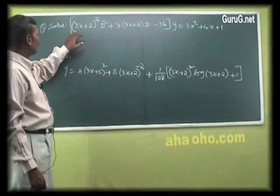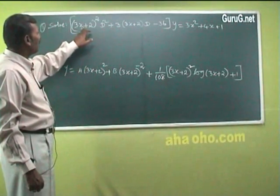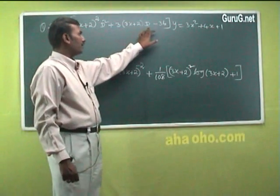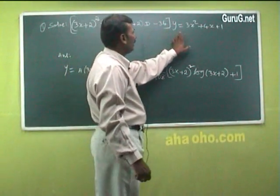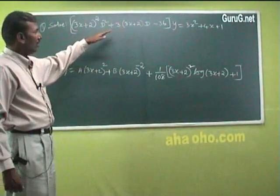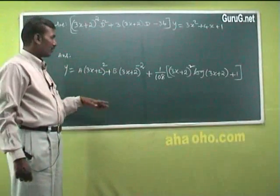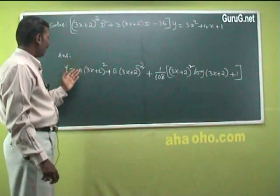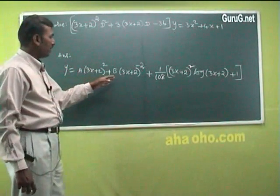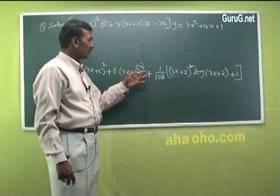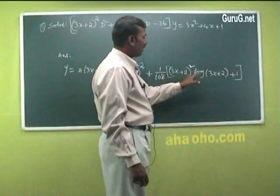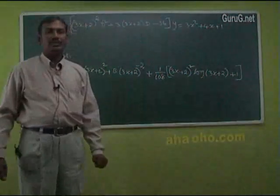Now try this practice problem: solve (3x+2)²(d²y/dx²) + 3(3x+2)(dy/dx) − 36y = 3x²+4x+1. It is also a Legendre equation; apply the same procedure. You may verify the answer: y = A(3x+2)² + B(3x+2)⁻² + (1/8)(3x+2)²·log(3x+2) + 1.